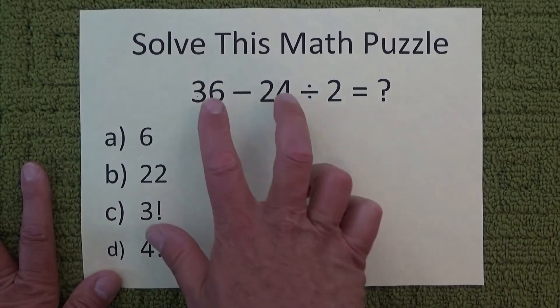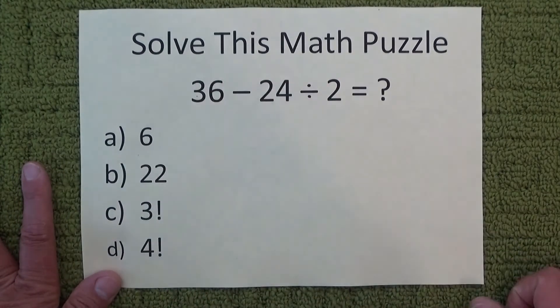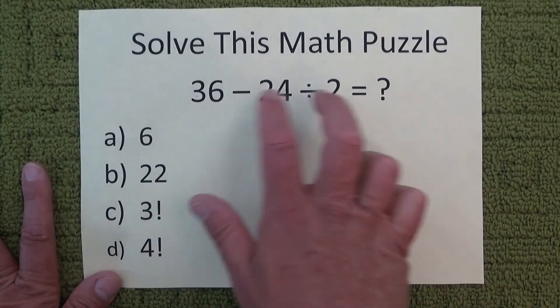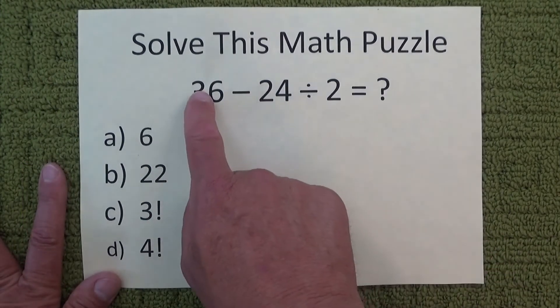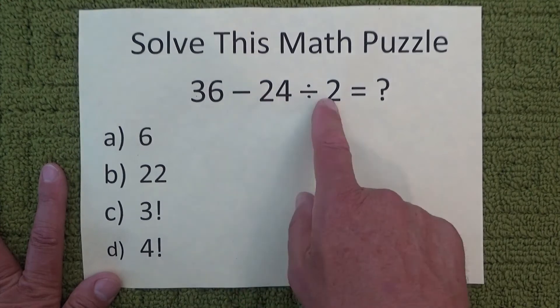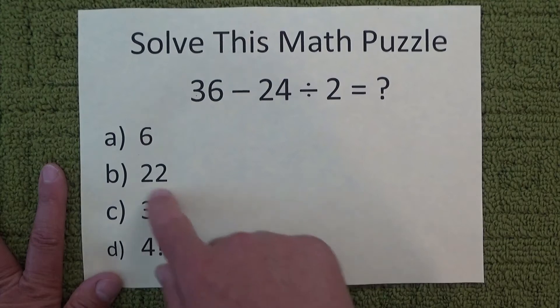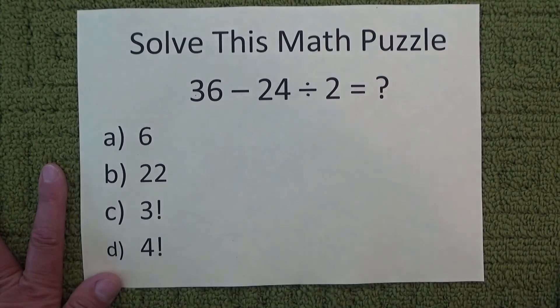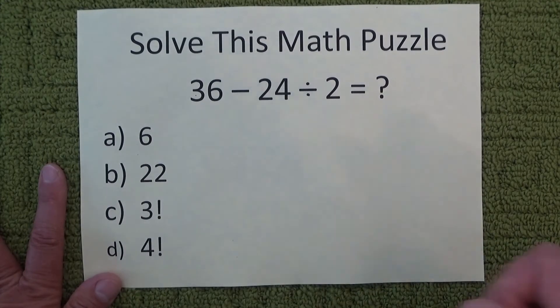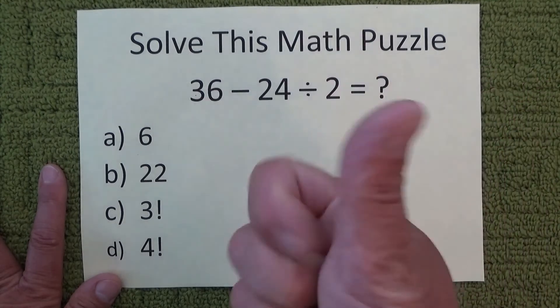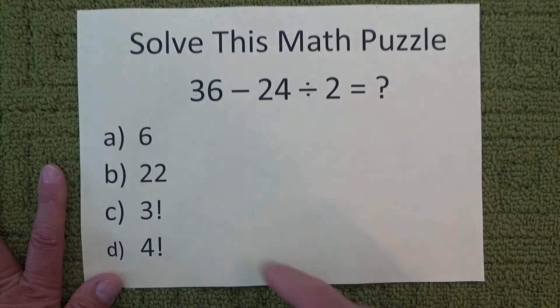Why this is a good puzzle is that if you do it the wrong way around, you do the minus before the division, which is 36 minus 24 is 12 divided by 2 equals 6. And 6 is up there as option A. 6 is also there as C, which is 3!, which is 3 times 2 times 1. 3 times 2 is 6, times 1 is 6.